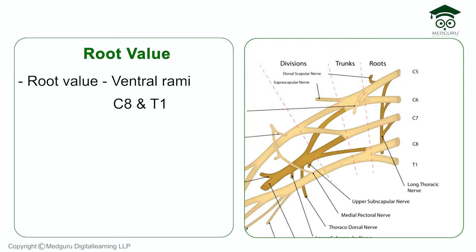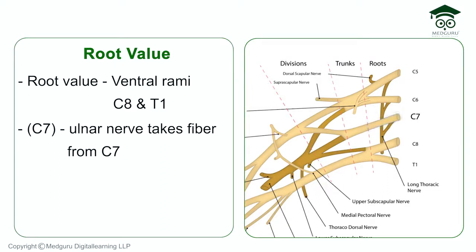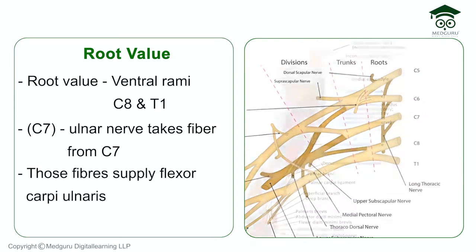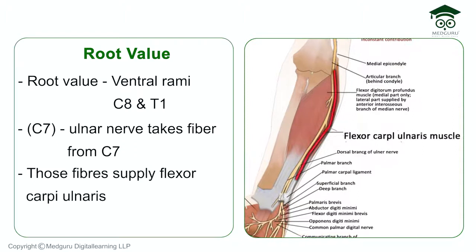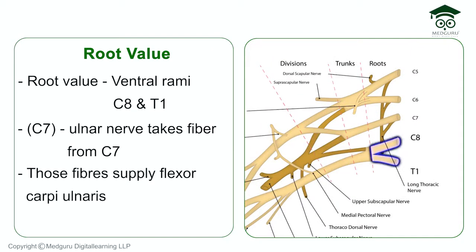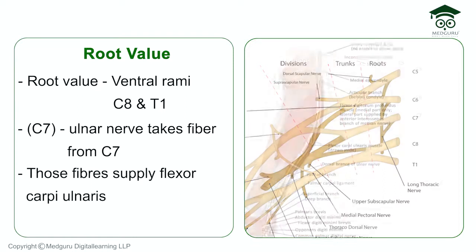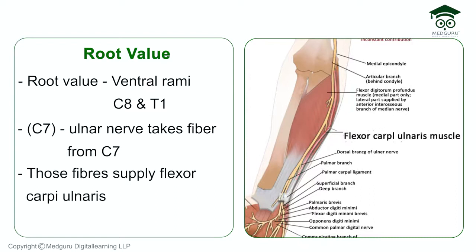Beside the root value of C8 and T1, you should also note C7 in brackets. The ulnar nerve takes fibers from C7, and those fibers supply the flexor carpi ulnaris. So the root value of the ulnar nerve is ventral rami of C8 and T1, with C7 also contributing to supply flexor carpi ulnaris.